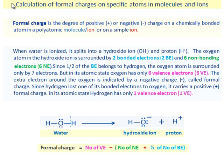Formal charge is the degree of positive or negative charge on a chemically bonded atom in a polyatomic molecule or ion. When water is ionized, it splits into hydroxide ion and proton.